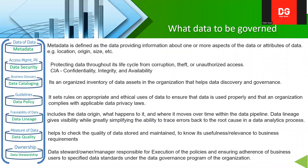Regarding what data needs to be governed: the first type is metadata. Metadata is the data about data. Any information stored in a database has associated metadata, which includes attributes such as the origin of the data, its size, and who saved it. This is very important for creating a catalog or glossary so you can locate the data.